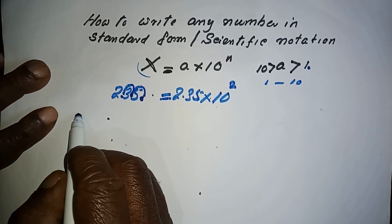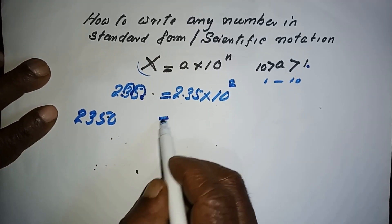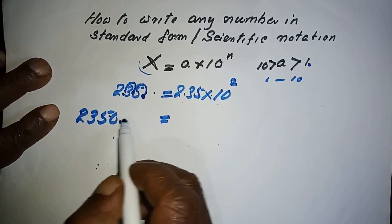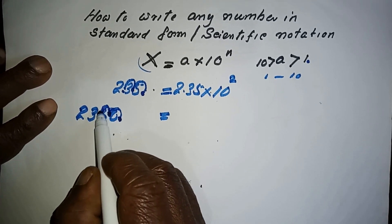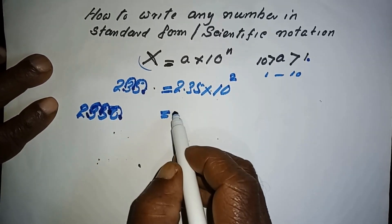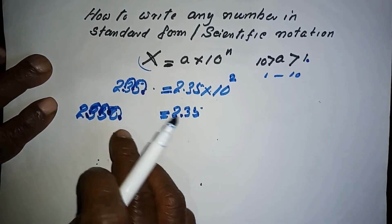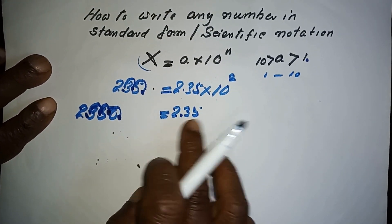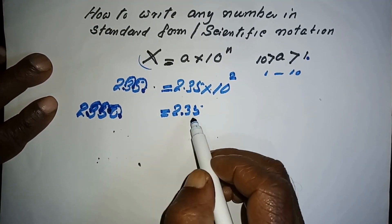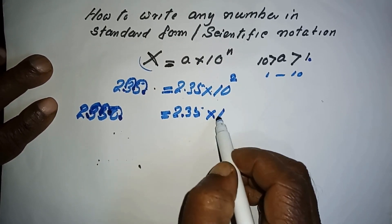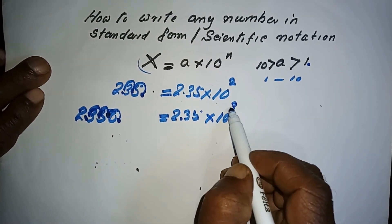Another example: take the number 2350. The first number should be between 1 and 10. We shift the decimal point 1, 2, 3 places, and it becomes 2.350 — and since 0 has no value, the number is 2.35. We had to shift three times, so the index will be 3. Therefore, 2350 = 2.35 × 10³.